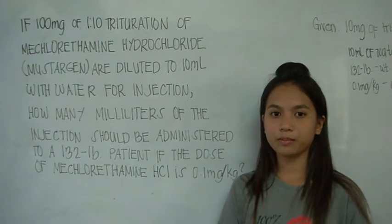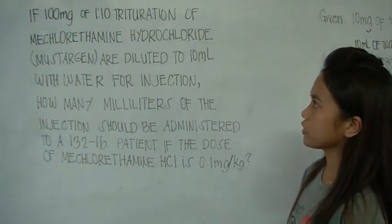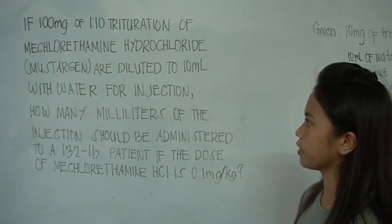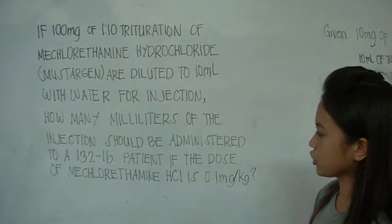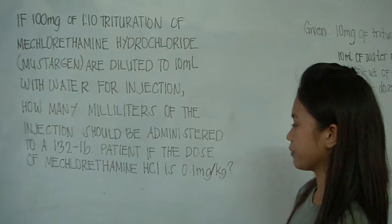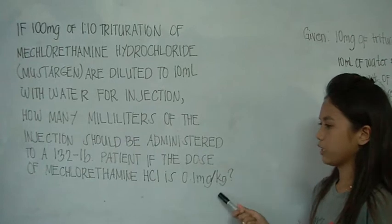we will compute using the method of tituration. If 100 mg of 1:10 tituration of mechlorethamine hydrochloride (mustagen) are diluted to 10 ml of water for injection, how many milliliters of the injection should be administered to a 132 pound patient if the dose of mechlorethamine hydrochloride is 0.1 mg per kilogram?